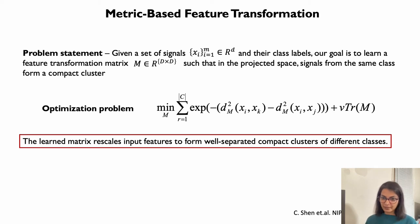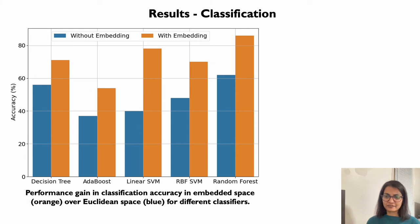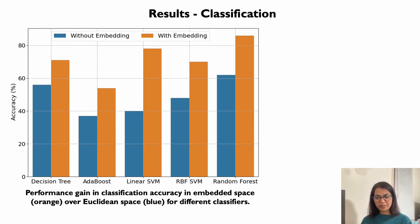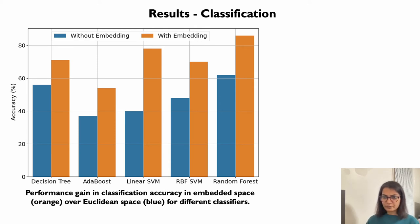The optimization function scales the data in the embedding space such that signals from very dissimilar groups are placed far apart and signals from similar classes are placed close together. We conduct various experiments to evaluate the accuracy and effectiveness of our algorithm. First, we evaluate how effective our method is in improving the classification performance of haptic textures.